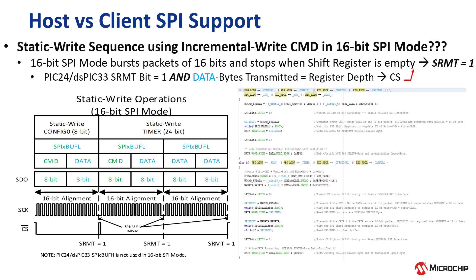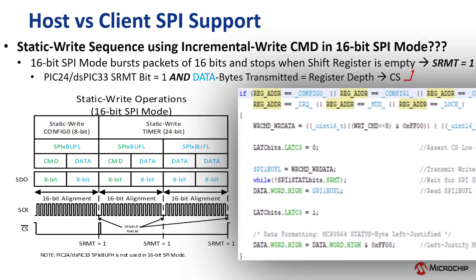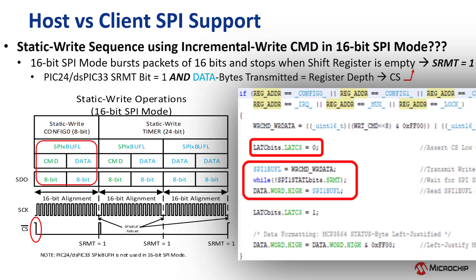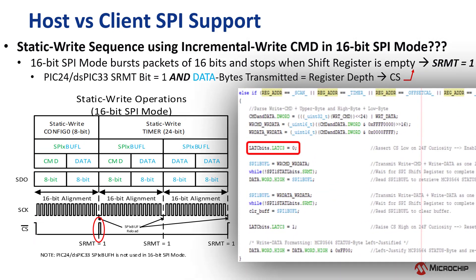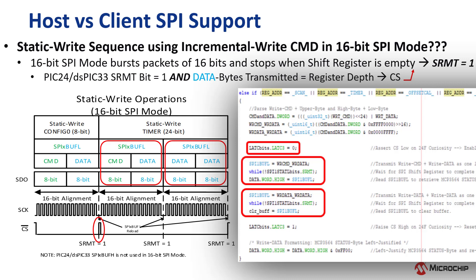In the table on the left, we show an 8 and 24-bit static write sequence, with the corresponding code on the right. For an 8-bit register static write, chip select is asserted low, then the write command along with the 8-bit data value is transmitted as a single 16-bit packet. Once the SRMT bit is set, chip select is raised to terminate the write sequence. For a 24-bit register, chip select is asserted low, followed by the write command and upper data byte as one 16-bit packet. The high and low data bytes are then transmitted as a second 16-bit packet, and once the SRMT bit is set, chip select is raised to terminate the write sequence.